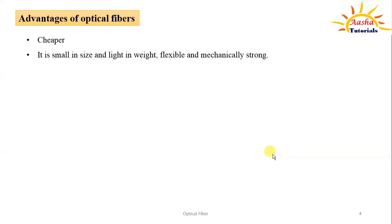Optical fibers are very small in size and light in weight. Along with flexibility they have very good mechanical strength. The size of optical fiber is in the order of micrometers. In terms of weight, copper cable weighs up to 1100 kilograms per kilometer, whereas optical fiber for the same purpose weighs only about 6 kilograms per kilometer — making it far lighter than copper cables.